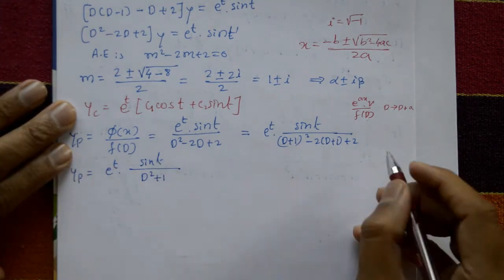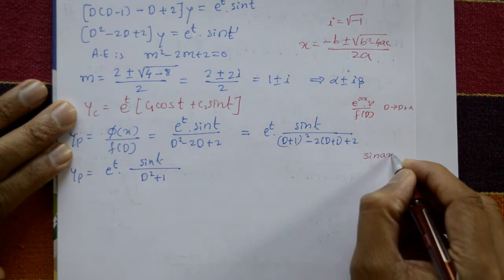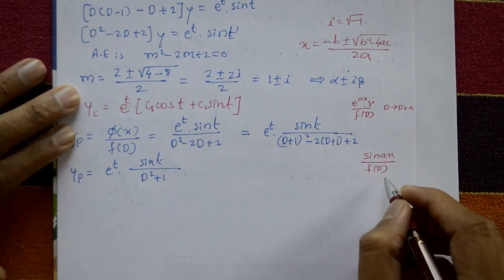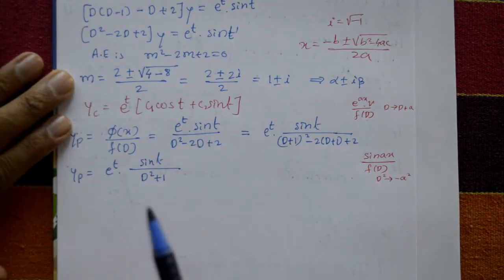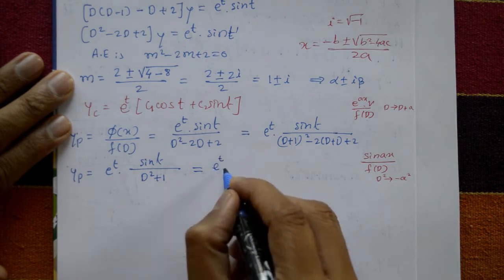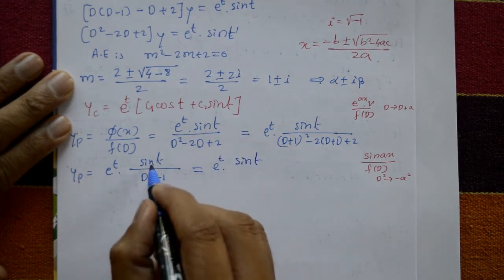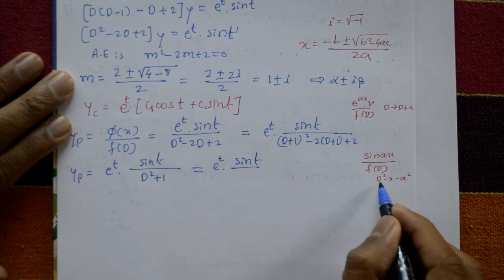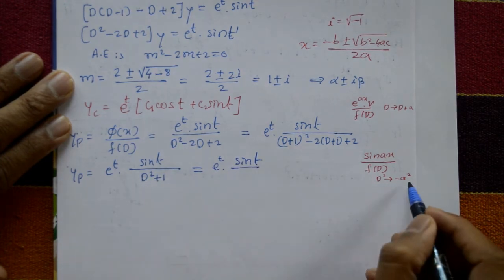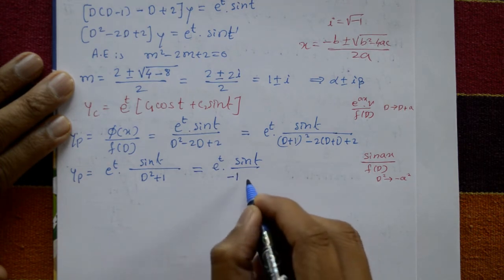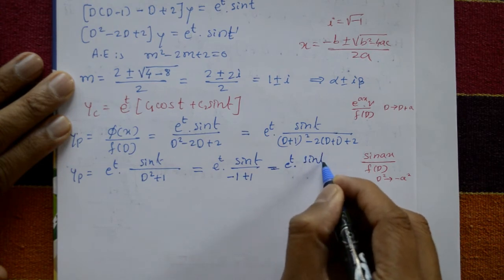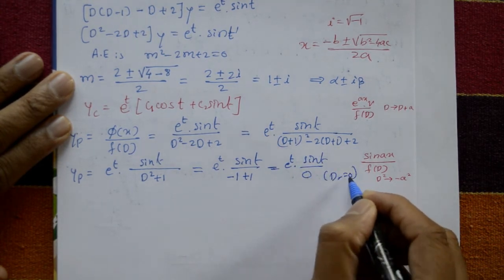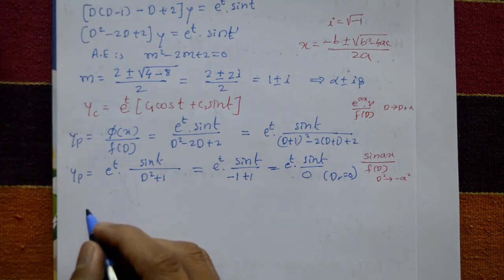Applying Type 2 with a = 1: substitute D² = −1² = −1 in the denominator, giving −1 + 1 = 0. Since the denominator is 0, we multiply the numerator by t and differentiate the denominator: d/dD of (D² + 1) = 2D. So yp = e^t · t · sin t / 2D.